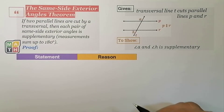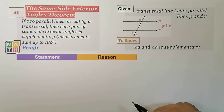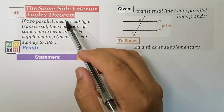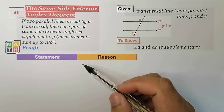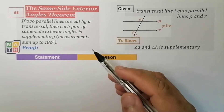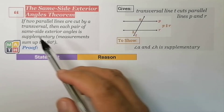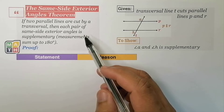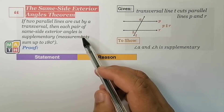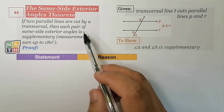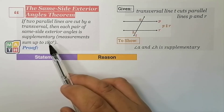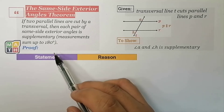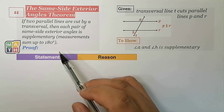Hello! We are going to prove the Same Side Exterior Angles Theorem for this video. This theorem states that if two parallel lines are cut by a transversal, then each pair of Same Side Exterior Angles is supplementary, or their measurements sum up to 180 degrees.